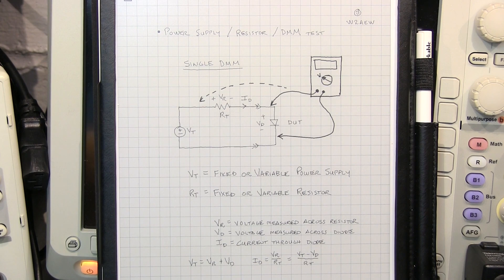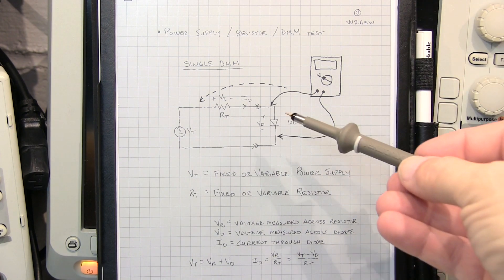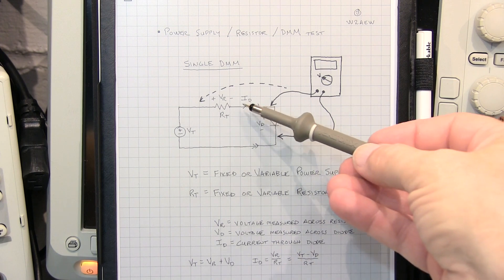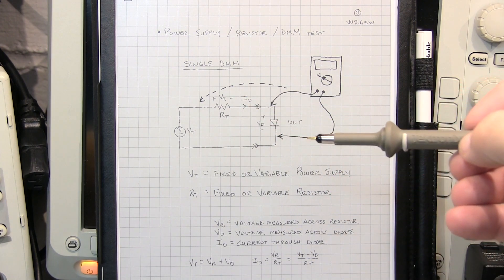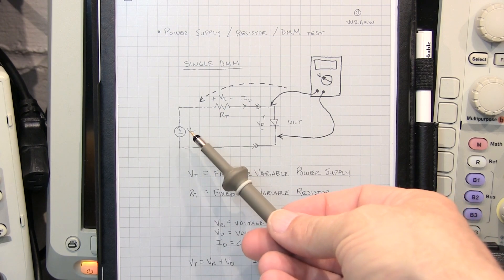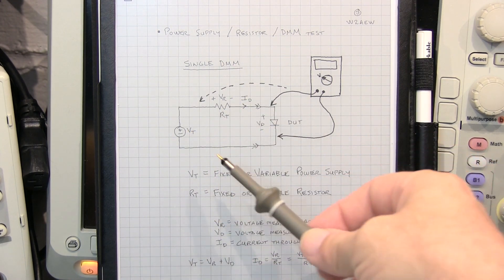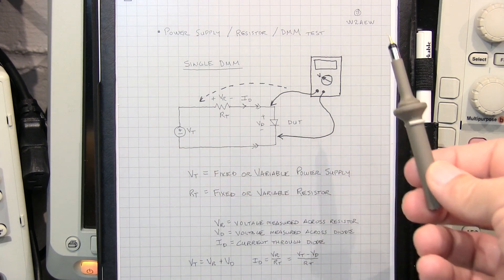Now if your DMM doesn't have a diode test function, or if the test current it uses is nowhere near the current that's going to be driven through the diode in the application or the circuit, you could use your own power supply, resistor, and DMM test circuit so that you can test the diodes and match them at a diode current that you pick or you specify. Now the power supply could either be a fixed power supply, or even a battery or something like that, whatever you've got around, or a variable lab power supply.